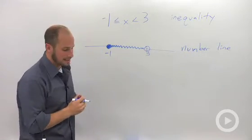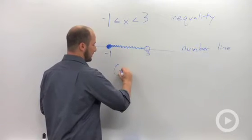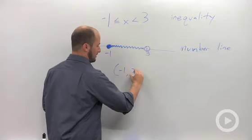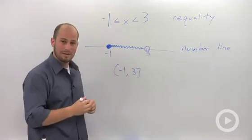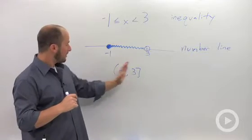Third way of doing this is what is called interval notation. And this can sort of look like a point from your rectilinear coordinate system. And basically it's the same way of writing it.